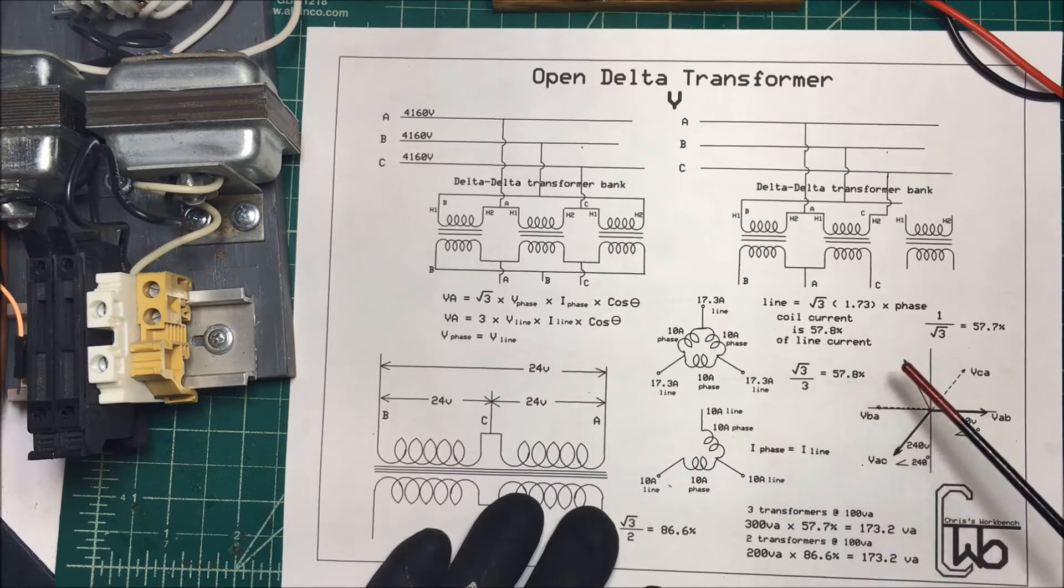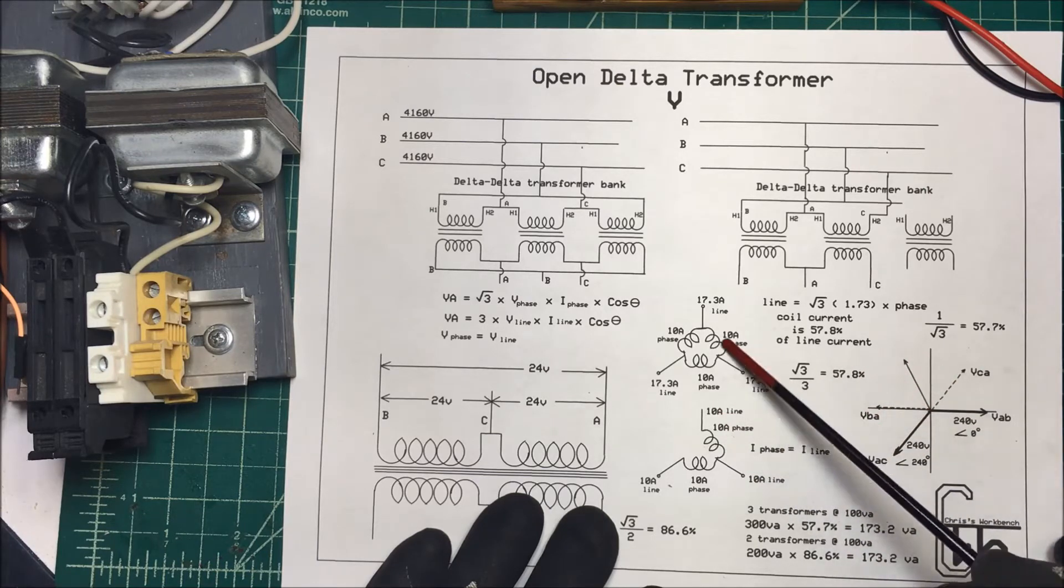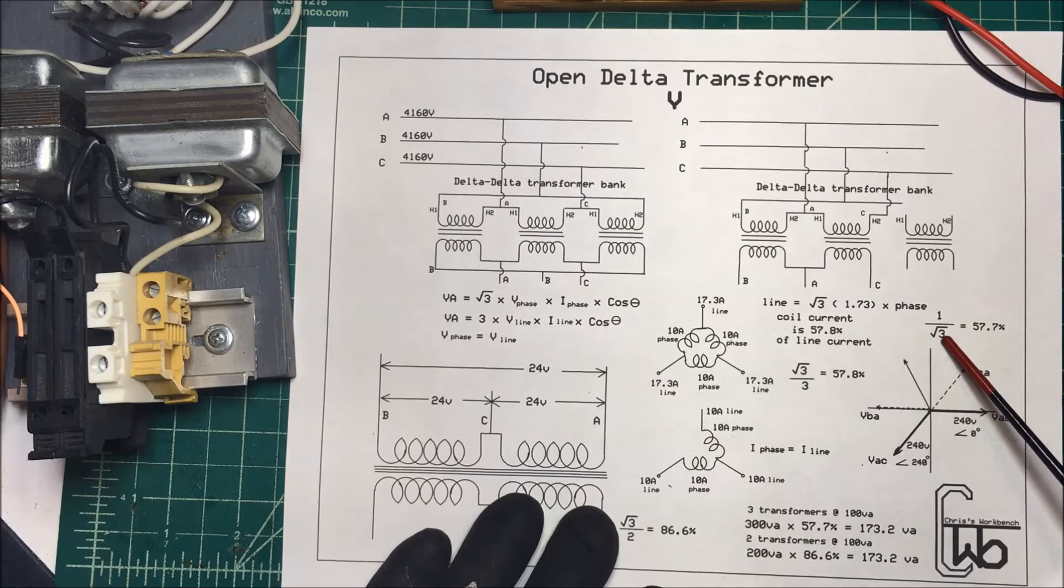So we need to take the, we've multiplied this by 1.73 to get this. So we need to take the reciprocal of the square root of three is 57.7% here. So our power is going to be down by 57%.